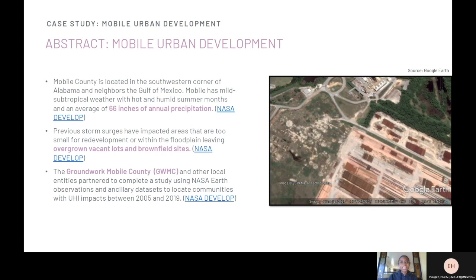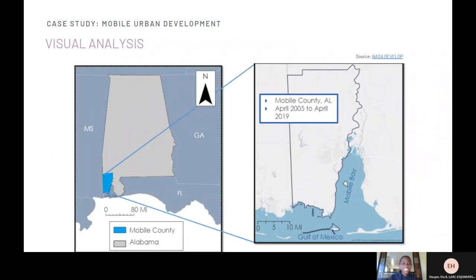Now we'll go into an abstract about the Mobile Urban Development. Mobile County is located in the southwestern corner of Alabama and neighbors the Gulf of Mexico. Mobile has a mild subtropical climate with hot and humid summer months and an average of 66 inches of annual precipitation. Previous storm surges have left vacant lots and brownfield sites. Groundwork and other local organizations were interested in using satellite data to locate communities with increased urban heat to understand areas to prioritize for greening activities. On your screen you'll see a visual representation of Mobile County within Alabama — it's a small portion of the state. On the right-hand side is a picture of Mobile between April 2005 and April 2019.